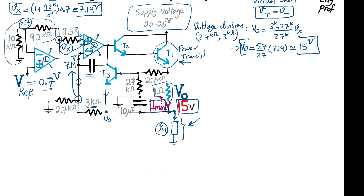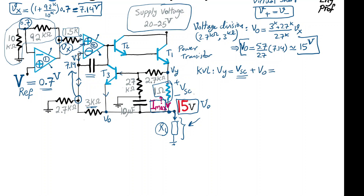The maximum current flows through the 1 ohm resistor and results in a voltage drop. That voltage drop is the saturation current times 1 ohm appearing across that resistor. We can find the voltage Vy using KVL: Vy equals the voltage drop across 1 ohm plus the constant Vout of 15 volts. So Vy = (1 Ω × I_sat_max) + 15 volts.